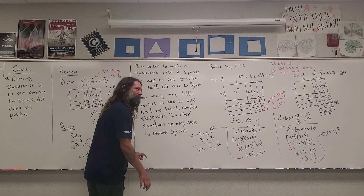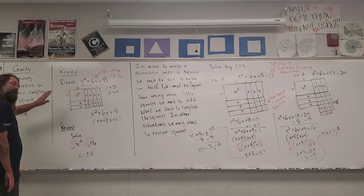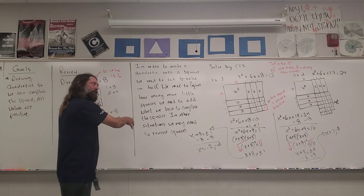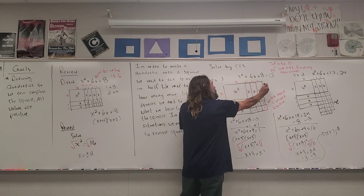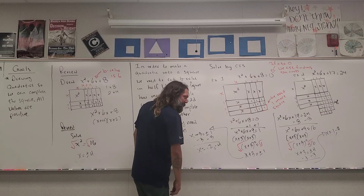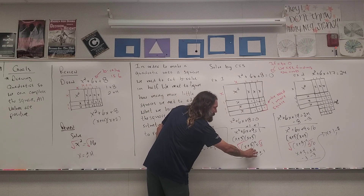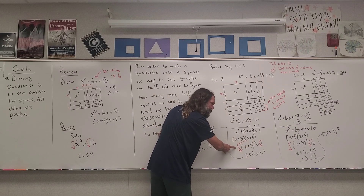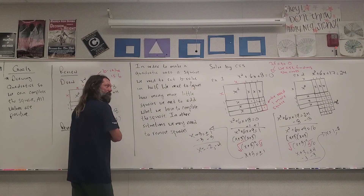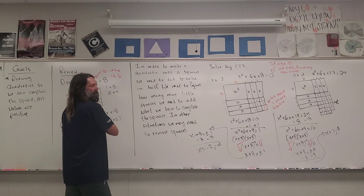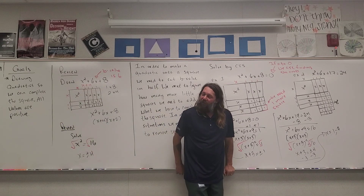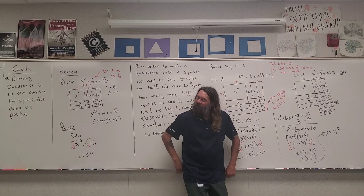Hopefully you understand why I wanted us to draw these quadratics — to get used to the process and understand how we cut the b value in half, forcing the length and width to be the same and giving us a square to complete. We can then square root away the square and continue to solve. I'll go ahead and end this lesson here. I hope everyone is doing alright out there — have a great day everybody.